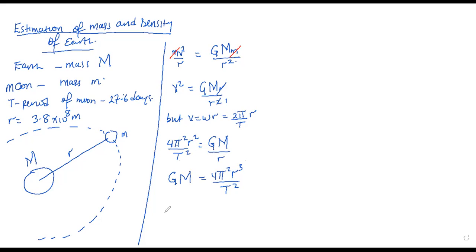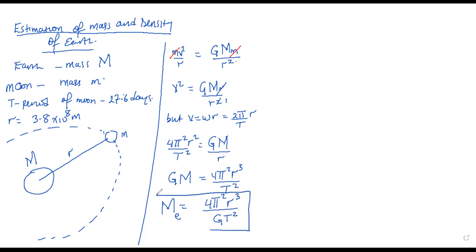The question wants us to find the mass of the earth. The mass of the earth — capital M — is going to be equal to 4π² R³ divided by capital G times T². So this is the equation for the mass of the earth, or for any planet with its moons revolving around it. Having seen the derivation of the equation, we are now good to go and substitute to find the mass of the earth.